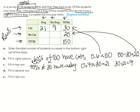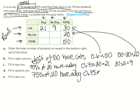Of the students who do not have a cat — that's 20 people — 75% have a dog. So 0.75 times 20 equals 15. So 15 people have no cat but have a dog. Then 20 minus 15 equals 5 — those are the people with no cat and no dog.